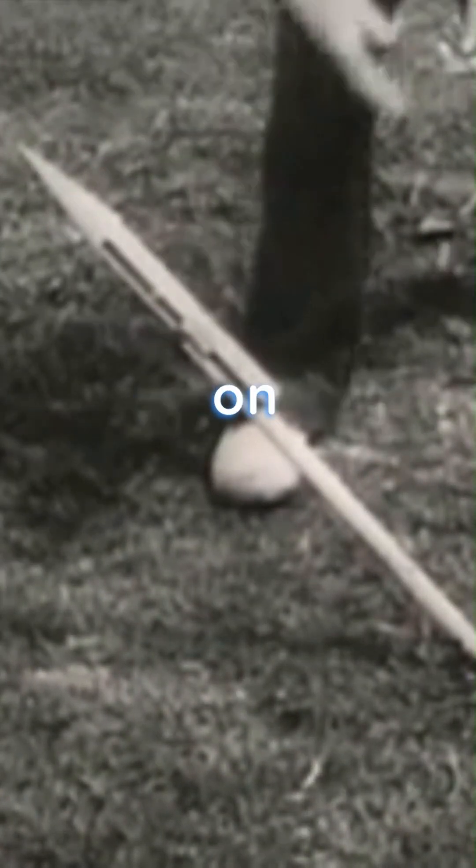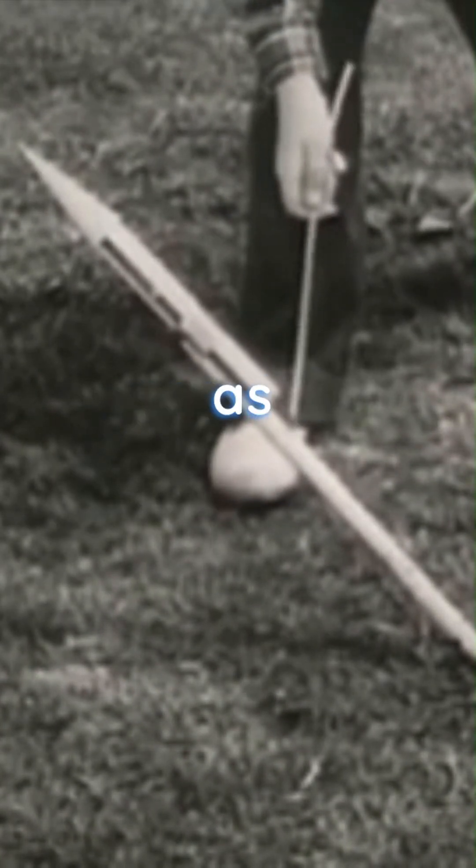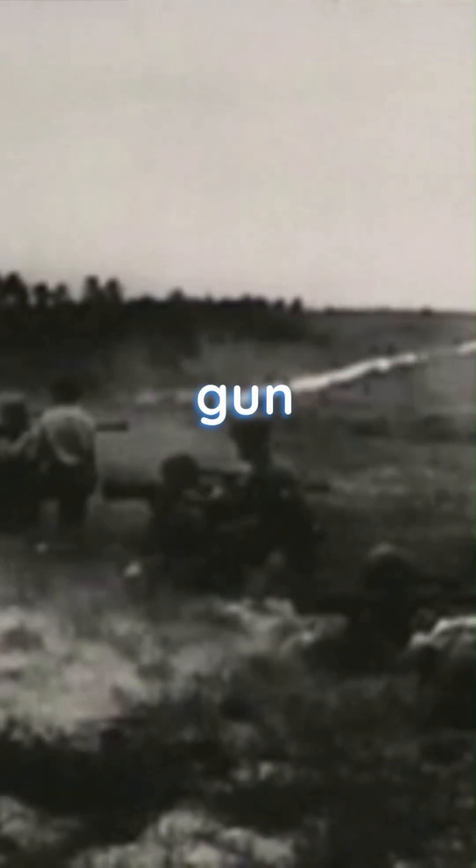Military rockets operate on exactly the same principle as the Fourth of July variety. The bazooka also uses the rocket principle, while the recoilless rifle is a combination gun and rocket.